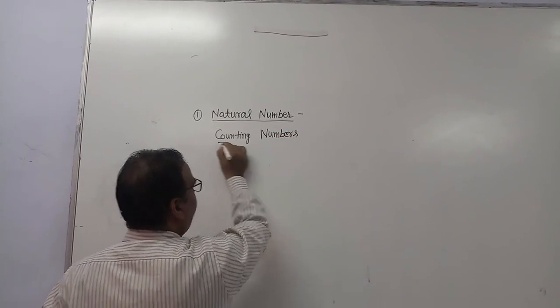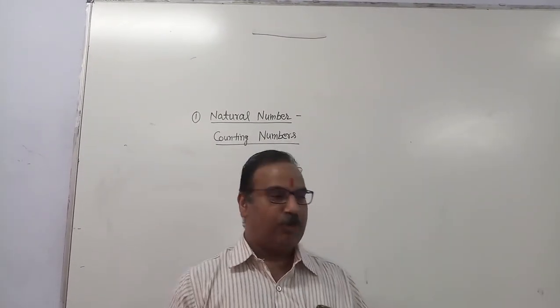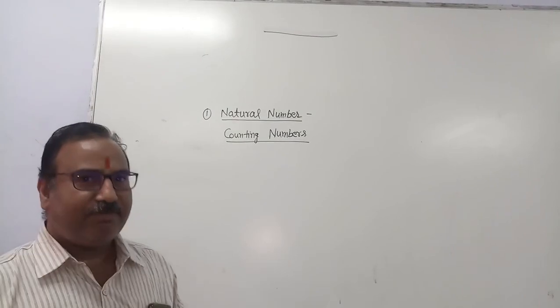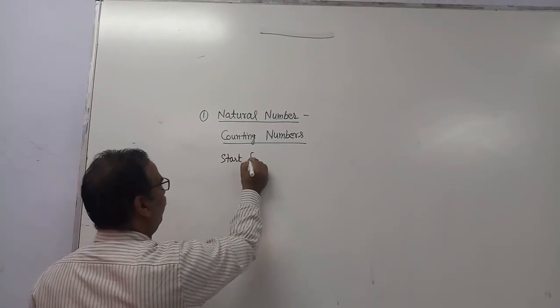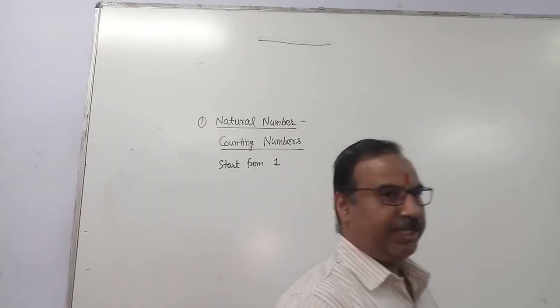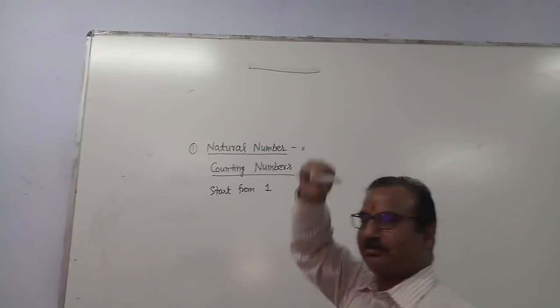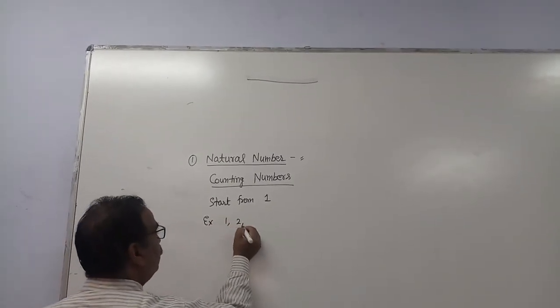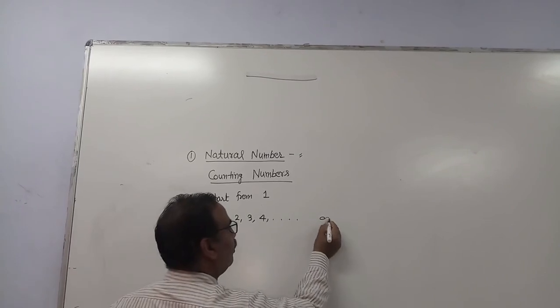These are counting numbers. If you want to count something, suppose there are 5 mangoes in your house and you want to count them, will you start from 0, then 1, 2, 3, 4, 5? Obviously not. So whenever you start counting, you always start from 1. So the numbers 1, 2, 3, 4, and so on are actually natural numbers. You may go up to infinity; there is no problem.